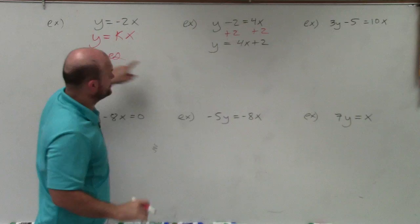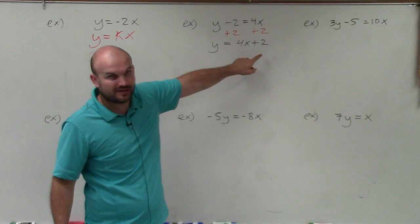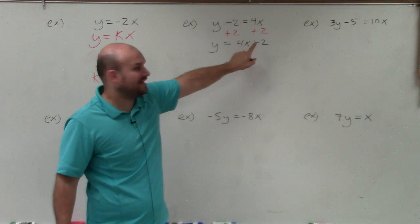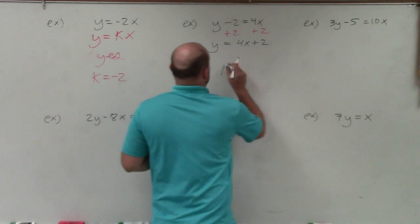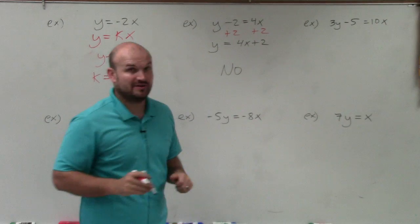Well, you notice that direct variation does not have any addition or subtraction here, right? I have 4x. I can't have my constant times x being added by 2. So therefore, this does not represent direct variation.